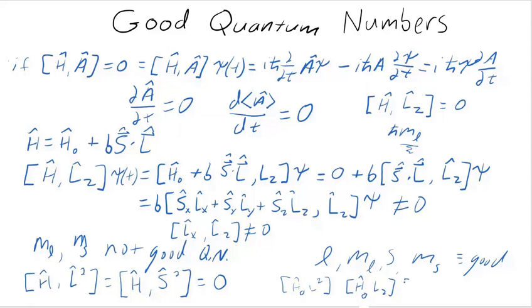And S with S squared. And M sub S is associated with the commutator with SZ. Those are all commutators that equals zero in the unperturbed hydrogen atom.